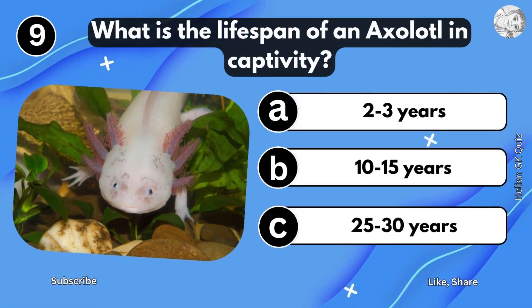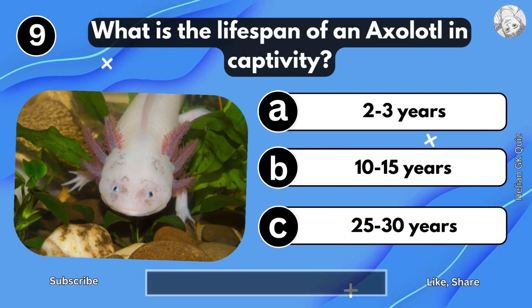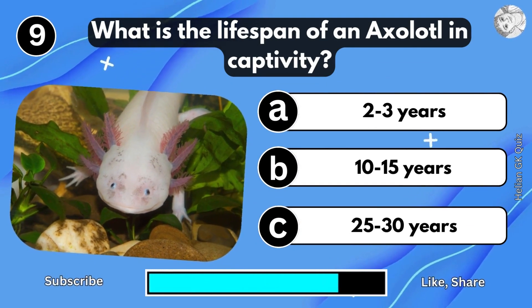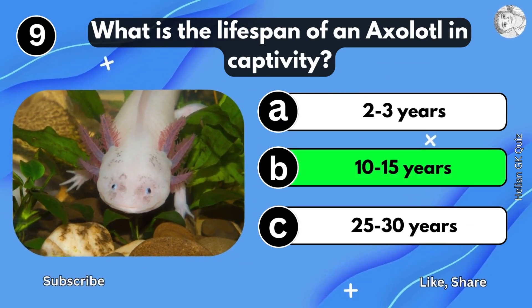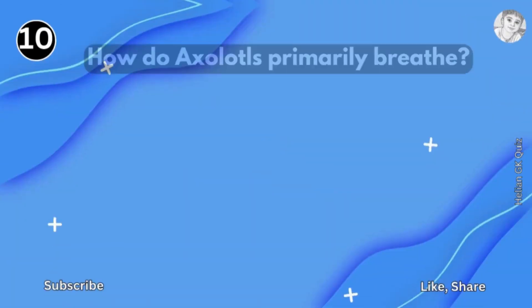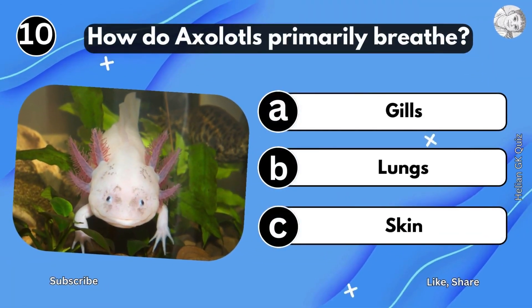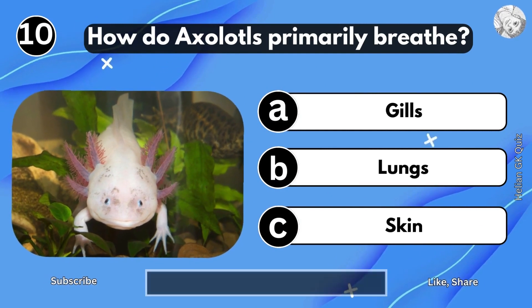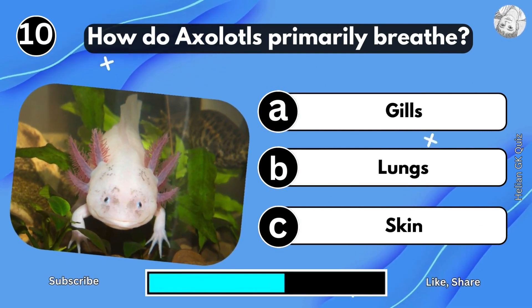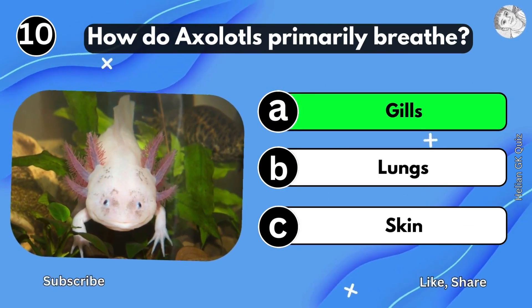What is the lifespan of an axolotl in captivity? 10 to 15 years. How do axolotls primarily breathe? Gills.